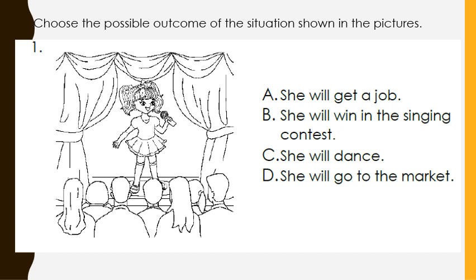Number one. As you can see, the girl is on the stage and she is holding a microphone. What is the possible outcome in this picture? A. She will get a job. B. She will win in the singing contest. C. She will dance. D. She will go to the market. Correct. She will win in the singing contest.